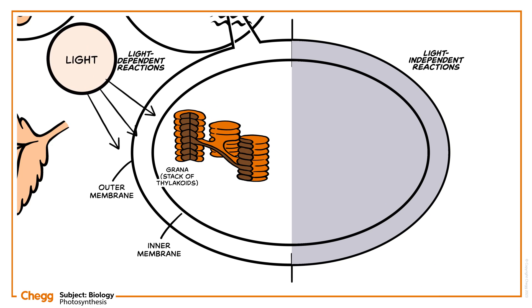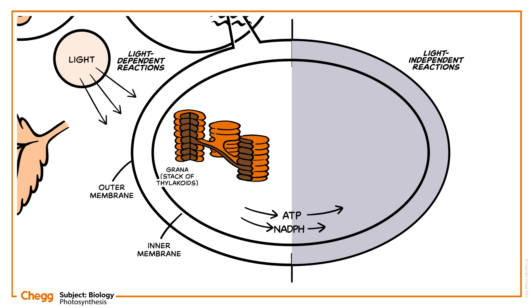Chlorophyll absorbs the light and converts it into chemical energy by forming molecules like ATP (adenosine triphosphate), which stores energy, and NADPH (nicotinamide adenine dinucleotide phosphate), which is an electron-bearing carrier. The water molecules are converted into oxygen.